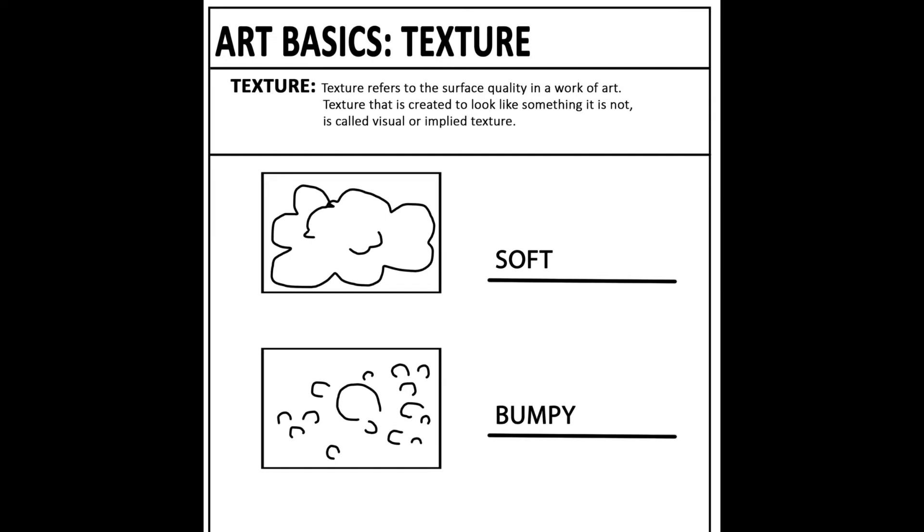The next texture is going to be bumpy. In the second box we're going to create an implied bumpy texture. You can do this by creating some C shapes in different sizes. Here's an example that I did of an implied bumpy texture.